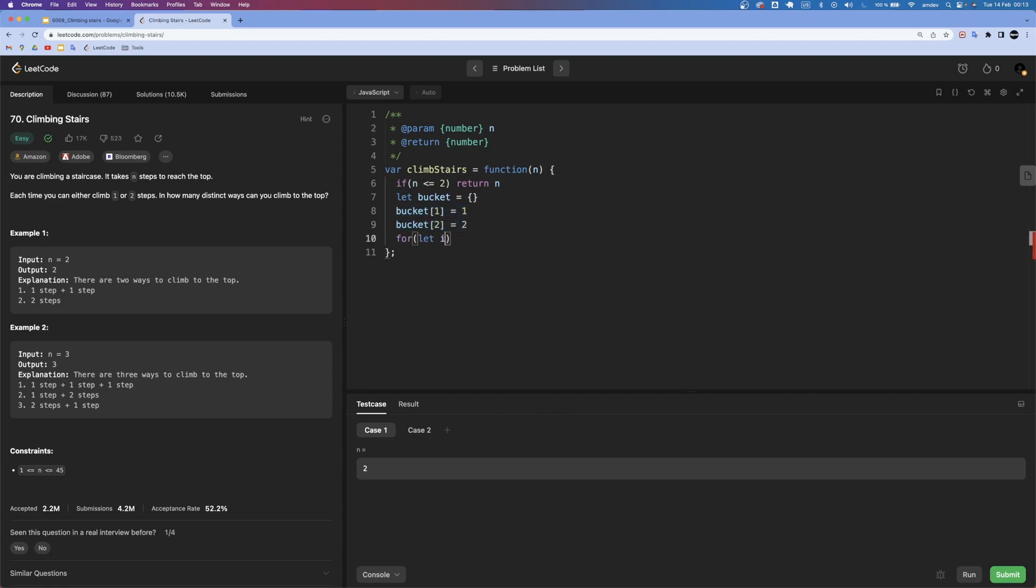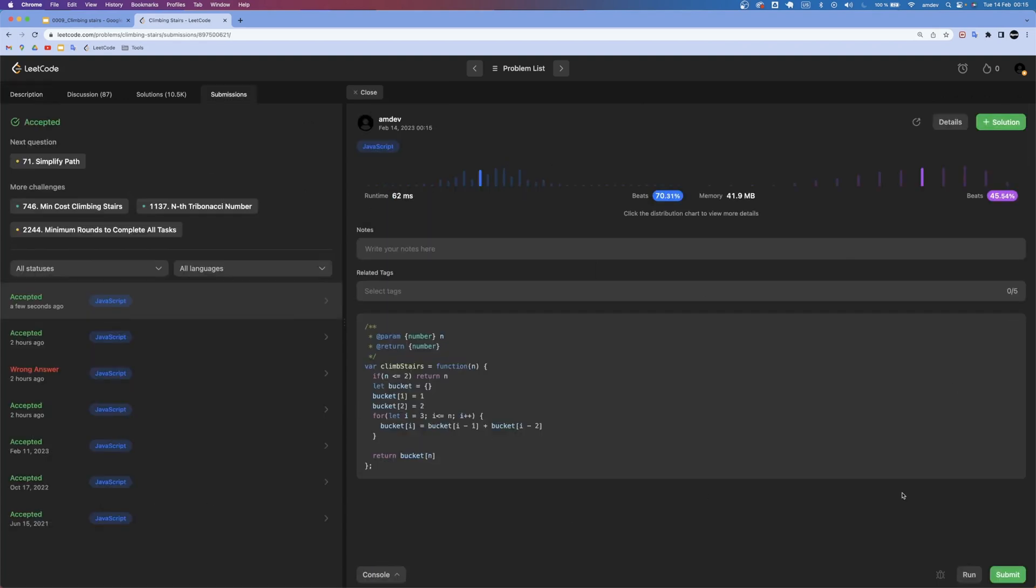So I will do: for let i equal to 3, i less than or equal to n, and i plus plus. Finally inside of our for loop we will do the possible ways for index i is going to be the sum of ways of the two last previous steps. So I will do bucket at index i-1 plus bucket at index i-2. And finally we will return bucket at index n because we already calculated that nth step inside of our iteration in here. So if I run this, everything is passing, and if I submit we are in good shape here.